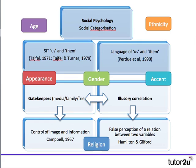Illusory correlation is Hamilton and Gifford's theory — a false perception of a relationship between two variables. For example, a false perception of a relationship between women and driving ability can create a stereotype. There may be a tiny bit of smoke, as we say, but this creates a huge blaze that becomes self-perpetuating, and people don't think to look at the actual truth at the bottom of it.